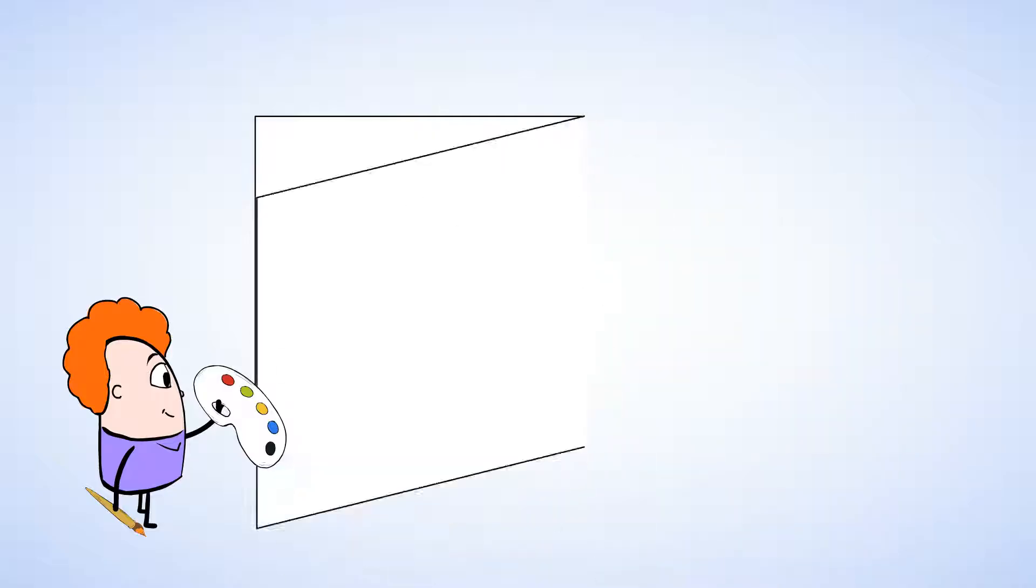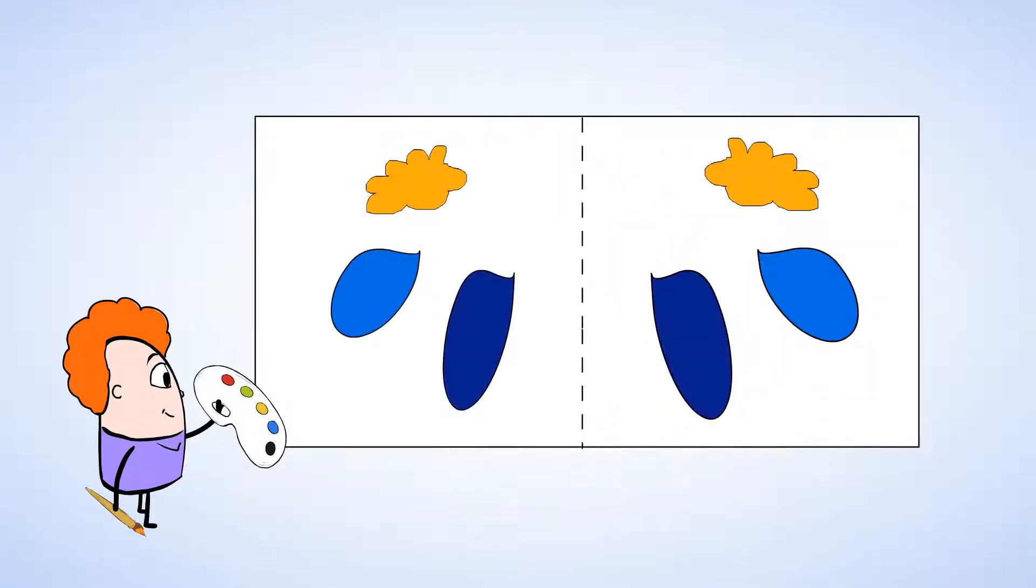Next, fold the paper back up and carefully press down. When you open it, you'll see the same design on the left side of the fold. Awesome right? You have just created a symmetrical image using a line of symmetry.